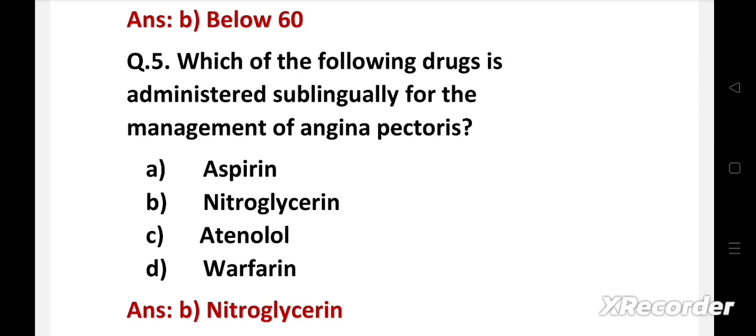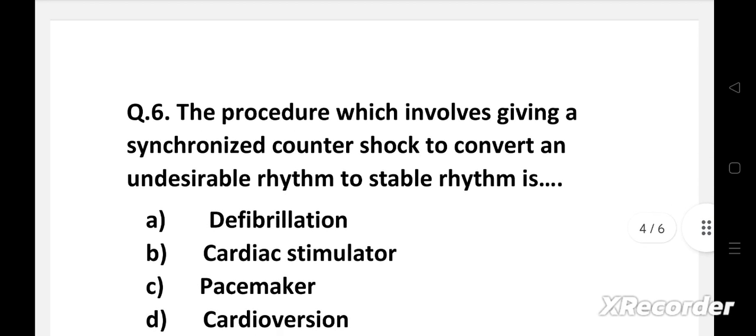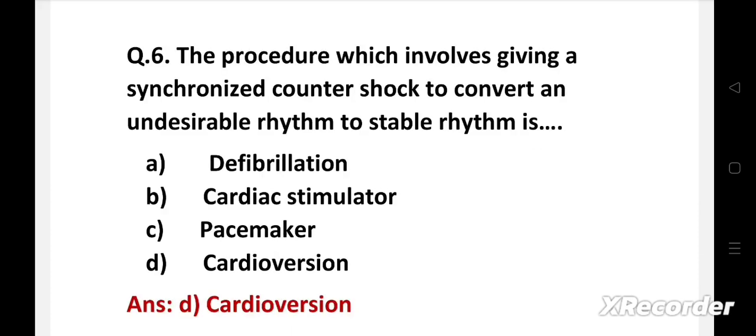Next question: the procedure which involves giving a synchronized countershock to convert an undesirable rhythm to a stable rhythm is option A: defibrillation, B: cardiac stimulator, C: pacemaker, D: cardioversion. Right answer is option D, cardioversion. Cardioversion is the process of converting a heartbeat that is in abnormal and potentially dangerous rhythm into a normal sinus rhythm.